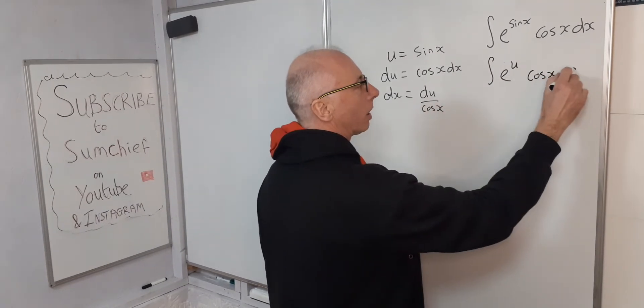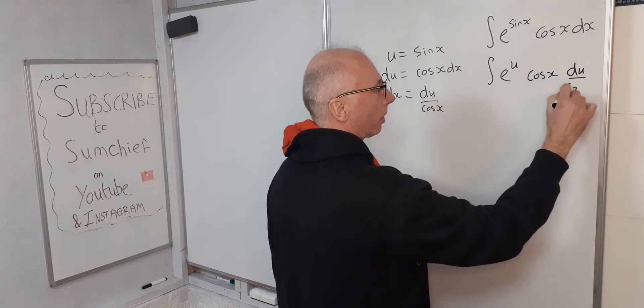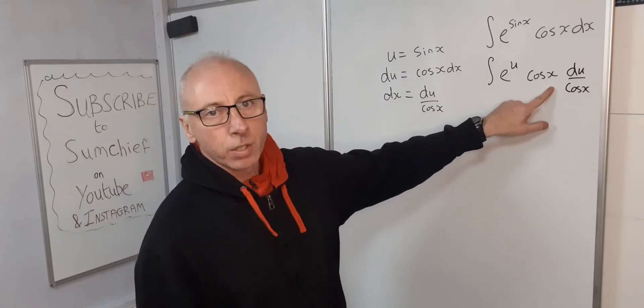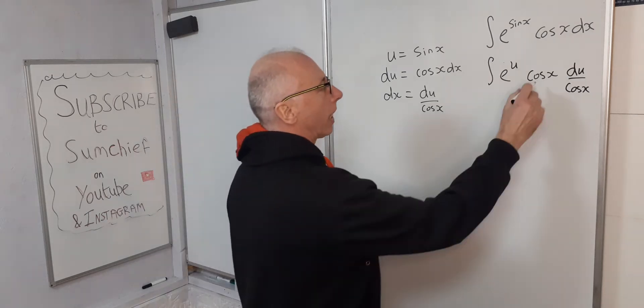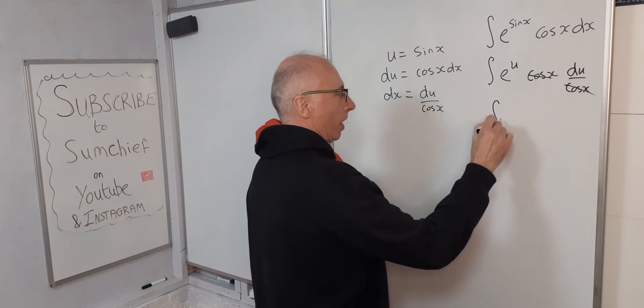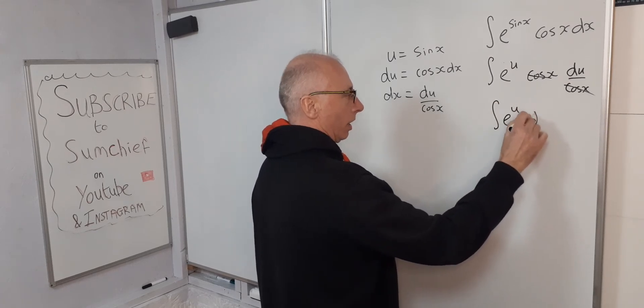So dx is du over cosine x. And as we said, cosine x, the two cancel out. But now we're left simplified, e to the u du.